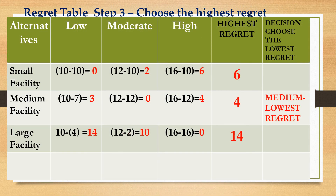The next step, after computing all regret amounts, is to determine the highest regret under each alternative — this represents the worst-case regret. For small size facility, the regrets are 0, 2, and 6 — the highest is 6. For medium, they are 3, 0, and 4 — the highest is 4. For large size facility, they are 14, 10, and 0 — the highest is 14. These are the worst amounts of regret for each alternative.